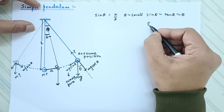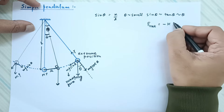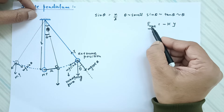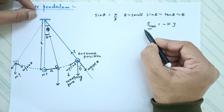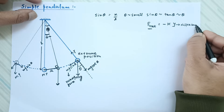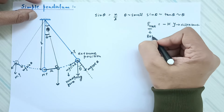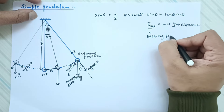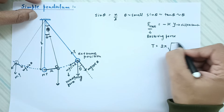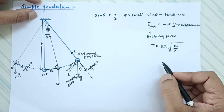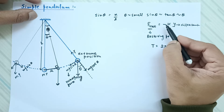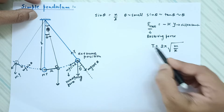In any SHM, the net force is always equal to minus k times y, where y is the displacement. This is the restoring force that brings the particle back to its mean position. We also know that T equals 2 pi under root of m by k, where m is the oscillating mass. If we can express the force in this form and find k, we simply substitute to get the time period.